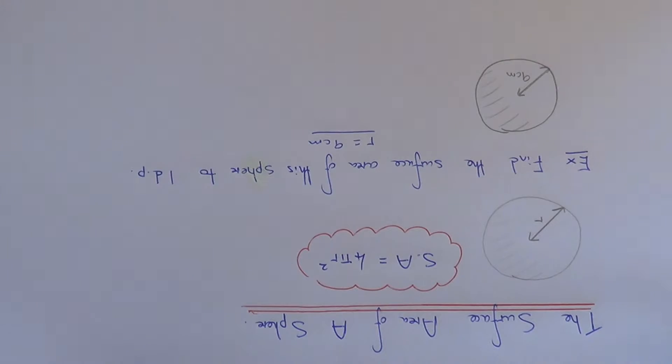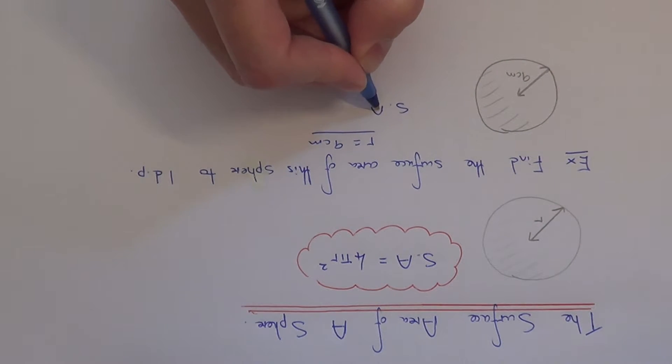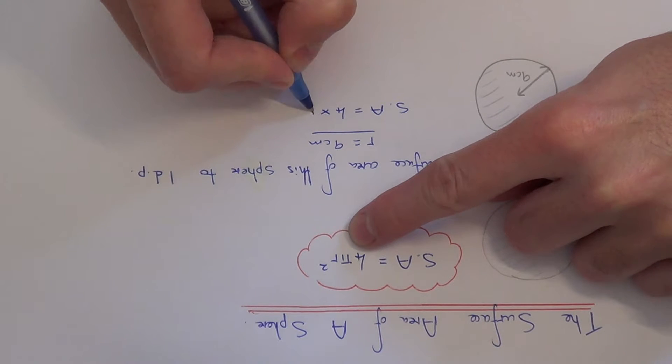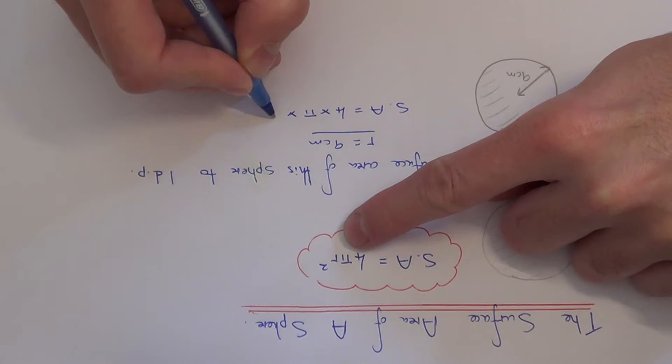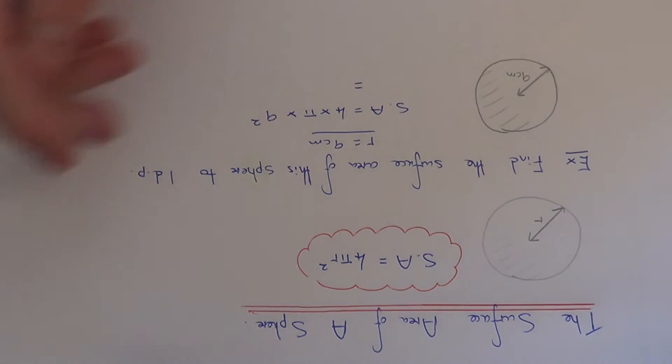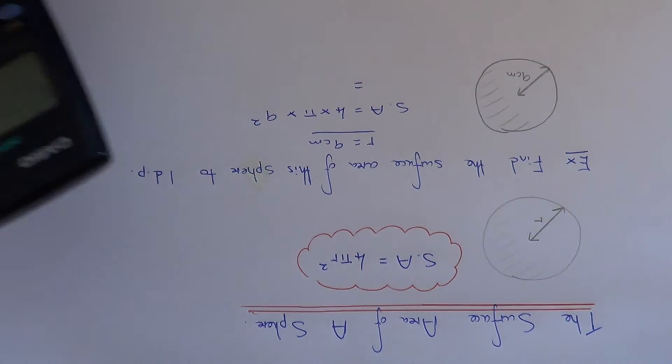So we just need to substitute this into the formula above. So it will be 4 times pi times 9 squared. If you get your scientific calculator and just type this one in.